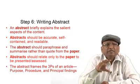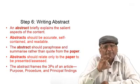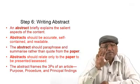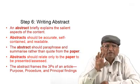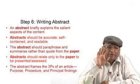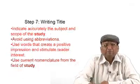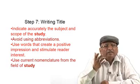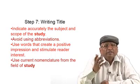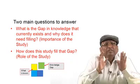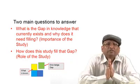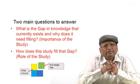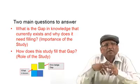Now we come to the abstract. The abstract should be accurate, and you should always remember the three Ps: purpose, procedure, and principle finding. The abstract should be self-contained and readable — from the abstract, your entire research paper should be reflected. The title should be short and meaningful, giving a correct picture of the research you are reporting.